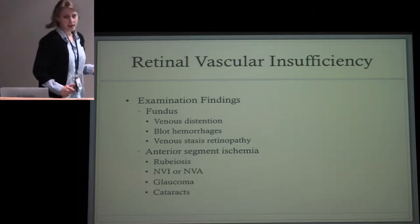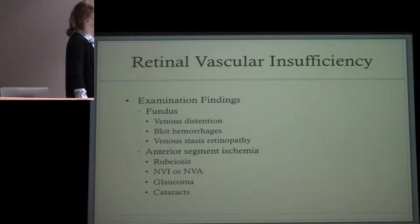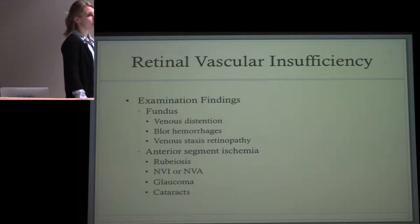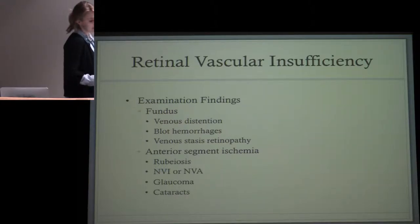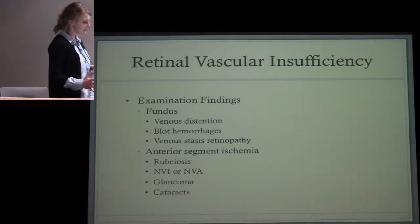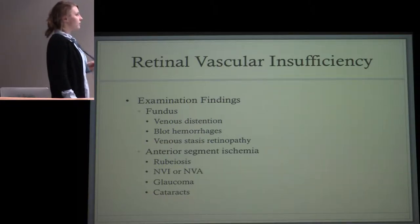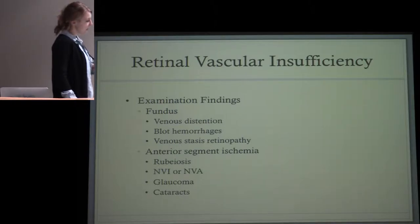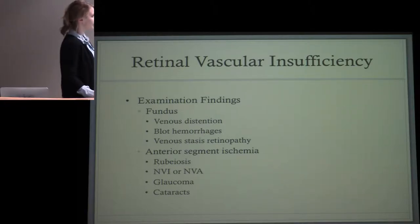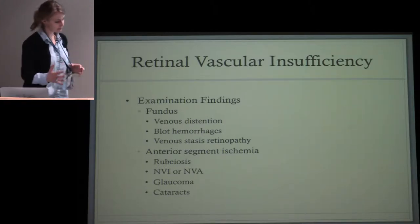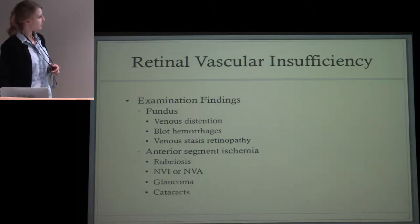Look for anything on the fundus exam that helps categorize these cases: venous distension, signs of venous stasis retinopathy, blot hemorrhages. Look at the whole eye — signs of anterior segment ischemia can tip you off to ocular ischemic syndrome and help differentiate these conditions. An FA can be helpful if the vasculature shows any asymmetry or suspicious findings.